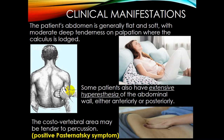The patient's abdomen is generally flat and soft on palpation, with moderate deep tenderness where the calculus is lodged. Some patients also have extensive hyperesthesia of the abdominal wall, either anteriorly or posteriorly, according to the localization of the stone. Pain in the upper part of the abdomen may indicate a calculus in the kidney or upper ureter; pain in the lower abdomen may indicate a problem at the ureterovesical junction or bladder.